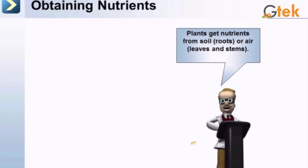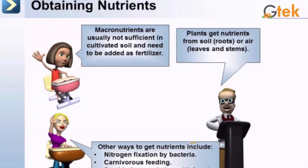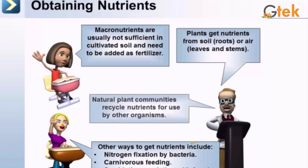The plant gets nutrients from soil and air through roots, leaves, and stems. When macronutrients are not sufficient, we use fertilizer. Other ways include nitrogen fixation, carnivorous feeding, and symbiotic association with fungi. Nutrient plant communities recycle nutrients for use by other organisms.